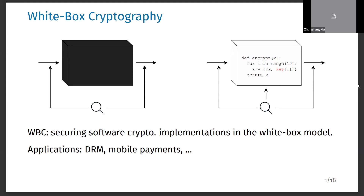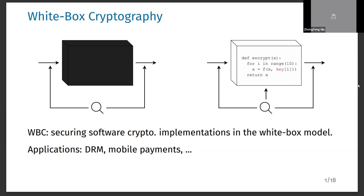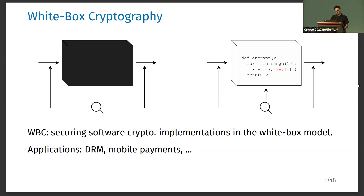White box cryptography was originally designed for DRM — digital rights management — or the protection of digital media, since in this case the consumer could be considered a malicious endpoint. But right now, white box cryptography is also being used in other applications such as mobile payments, and in general other applications where one is deploying a sensitive cryptographic implementation in an untrusted environment such as a smartphone.